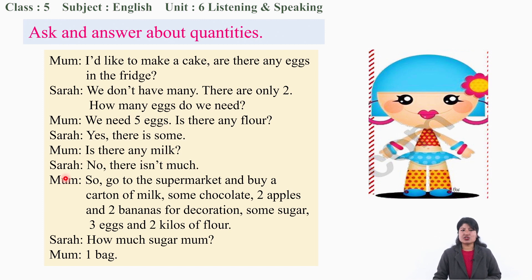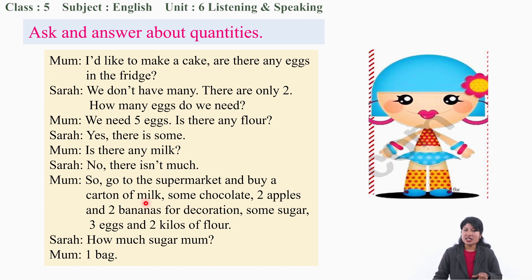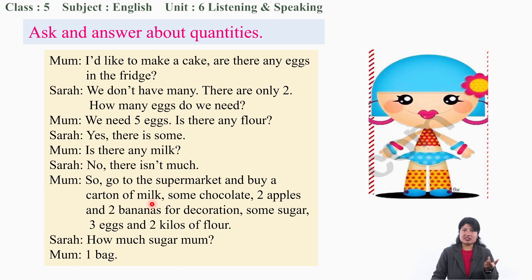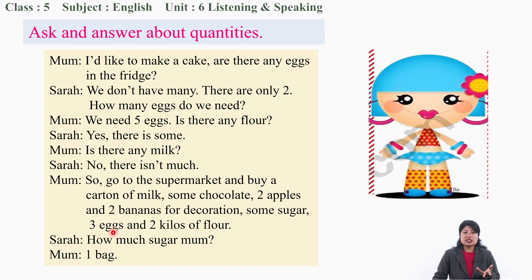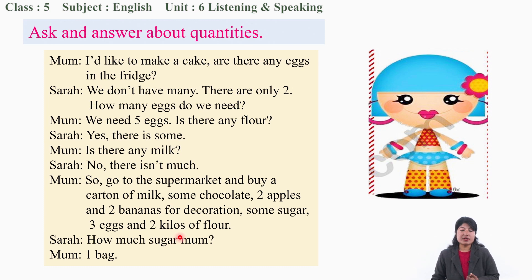Mom asks: 'Is there any milk?' Shara: 'No, there is not much.' So Mom says: 'Go to the supermarket and buy a carton of milk.' Notice how quantity is expressed - a carton of milk. In our market we get milk in packets as well, in liters. You can ask for one liter of milk, two liters. Also buy some chocolate, two apples, two bananas for decoration, some sugar, three eggs, and two kilos of flour. Flour we buy in kilos - two kilos of flour.